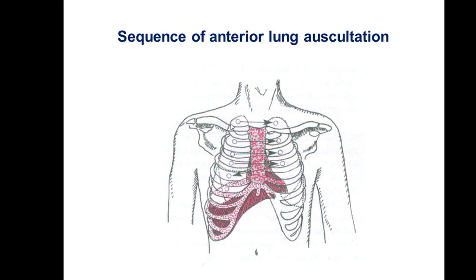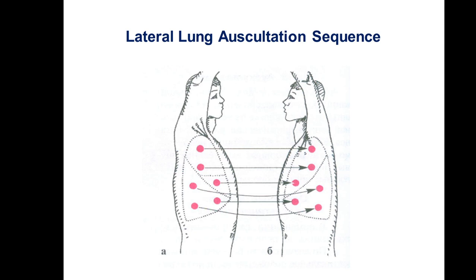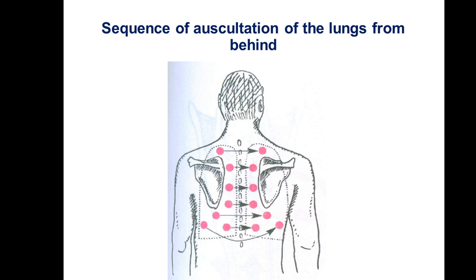Always we should auscultate the anterior part first. Don't forget about the apexes and supraclavicular fossae, then go space by space. We also ignore the heart area and auscultate only the area free from the heart, then compare. Then go to the lateral part of auscultation. The sequence of auscultation from behind follows points similar to those of percussion of the lungs.